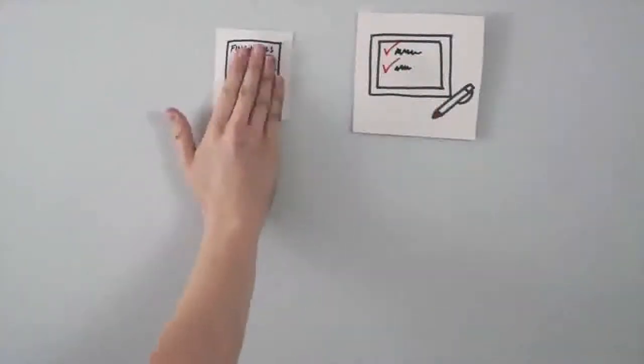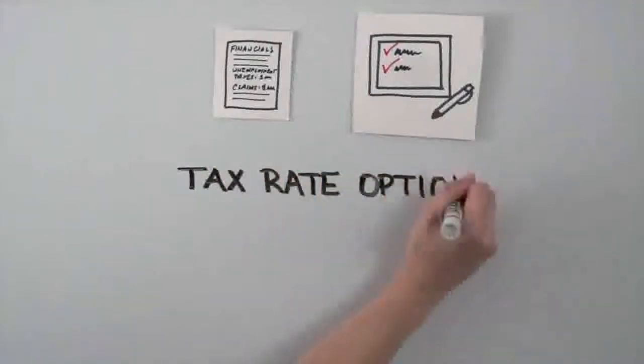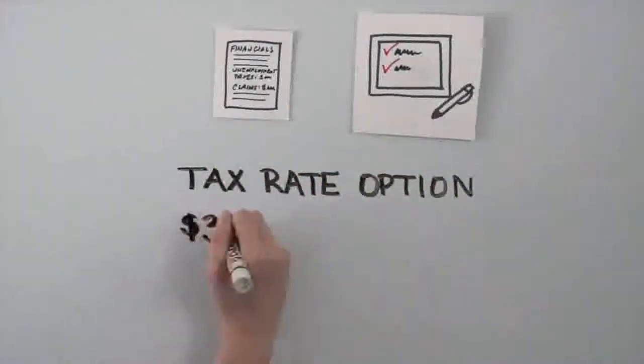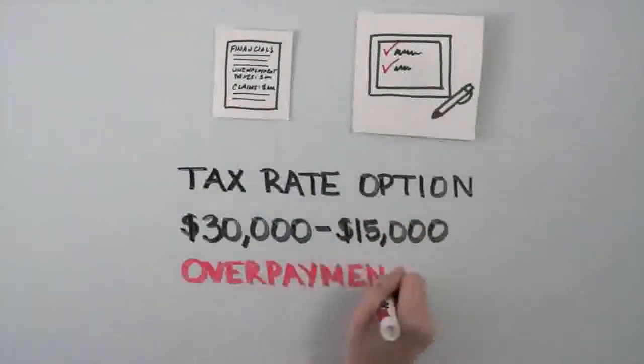If paying SUI via the tax rate option, let's say you are required to pay the state $30,000 for unemployment taxes. However, your claims for the year were only $15,000, resulting in a difference of $15,000.